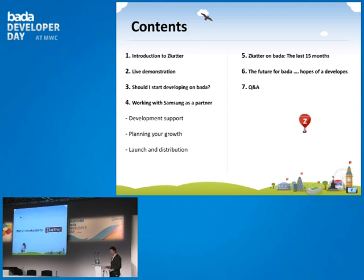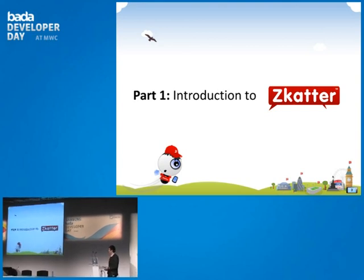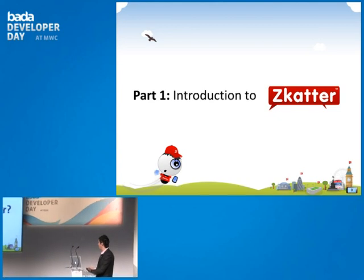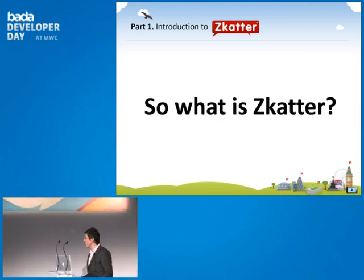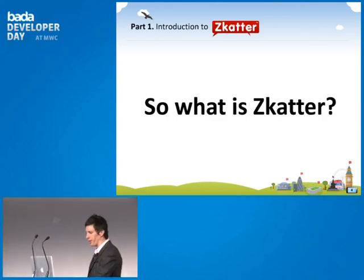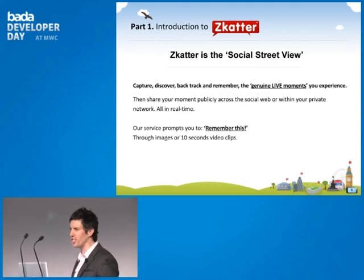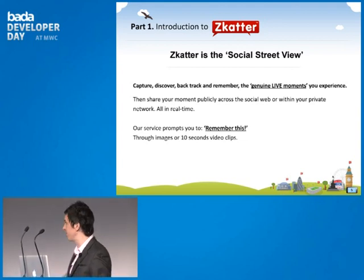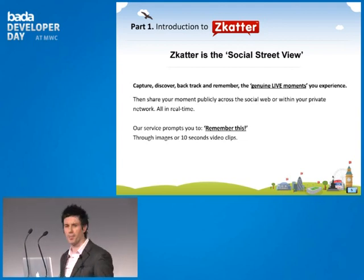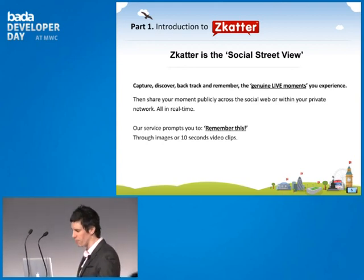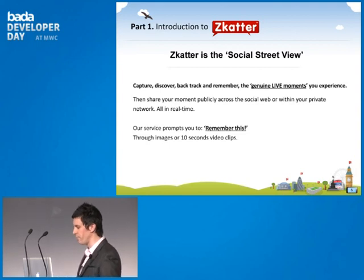So, an introduction to Scatter and what it is. Scatter is what we call the social street view. It allows you to capture, discover, backtrack, and remember the genuine live moments that you experience. You can then share these moments publicly across the social web, within a private network, or in real time. Our service prompts you to remember through 10-second video clips or images.